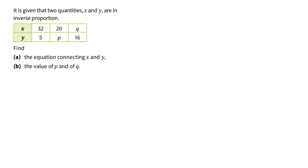Hello everyone, welcome to this video where we are given two quantities. The question has already informed us that these two quantities are in inverse proportion, and therefore I could straight away make use of the fact that given any inverse proportion, the two quantities x and y when multiplied give a constant value k. Given this table of values, that is what we are going to make use of.